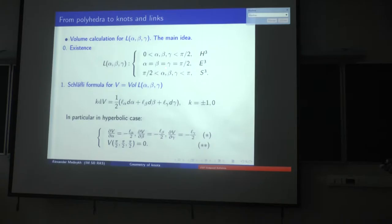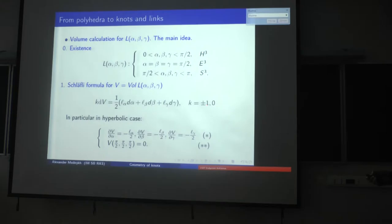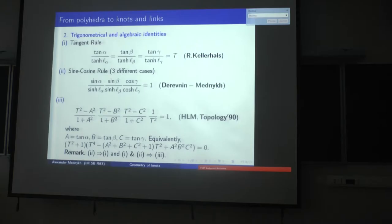Now I want to calculate the volume of this geometrical object. To do this, I introduce the notion of the Lambert cube as before, using the central angle. A long time ago, Schläfli introduced what we call the Schläfli formula for the differential of volume. K is just the curvature of our manifold: minus one in the hyperbolic case, plus one in the spherical, and zero in the Euclidean case. So to find the volume, we have to solve this system of differential equations. Some specific initial values are also needed to ensure the solution is unique. If we are able to solve this system, we can find the volume. This is quite difficult in general if we know nothing about the geometrical structure of the polyhedron, but our polyhedron is quite nice.